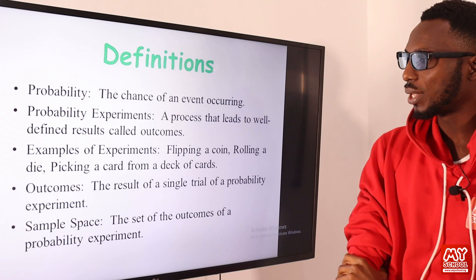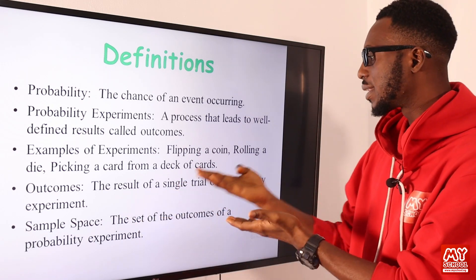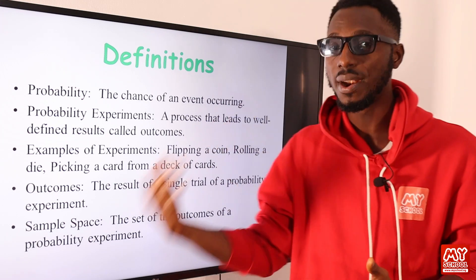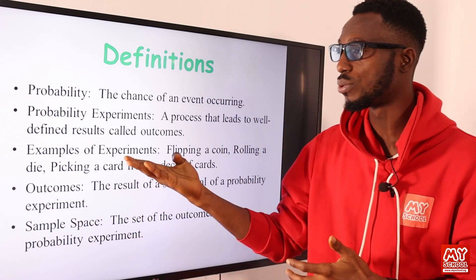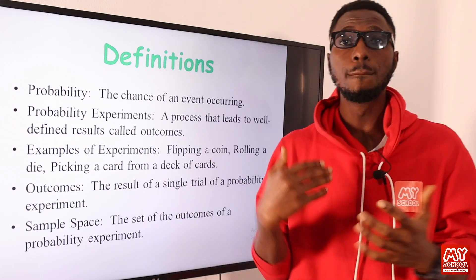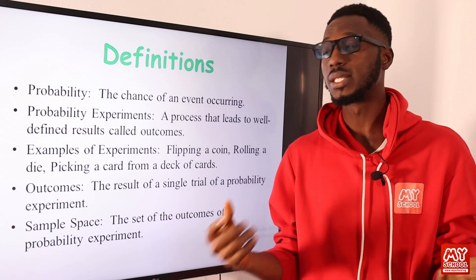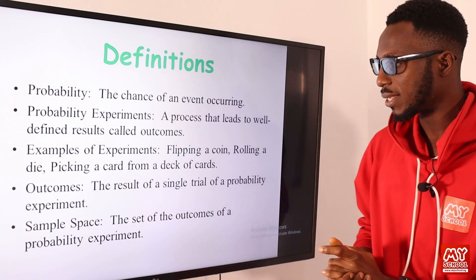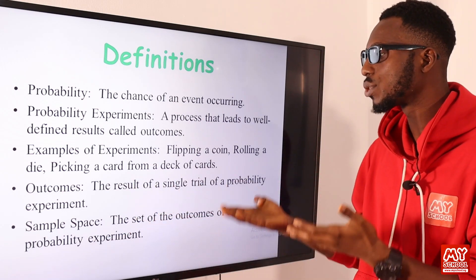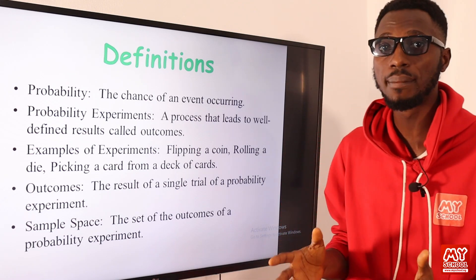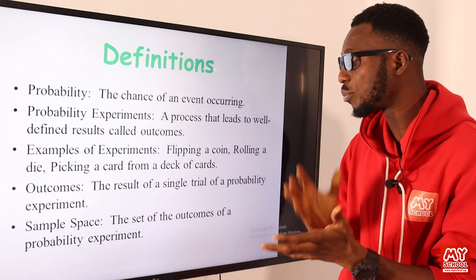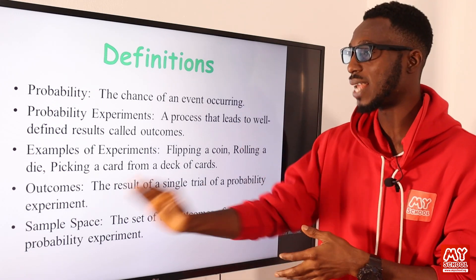So what is an outcome? The result of a single trial of a probability experiment. Once you carry out an experiment, the result you are going to get is what you refer to as your outcome or outcomes. Certain trials can come up with more than one outcome. The sample space is the set of all the outcomes of a probability experiment — the accumulation of all the possible results you can get.